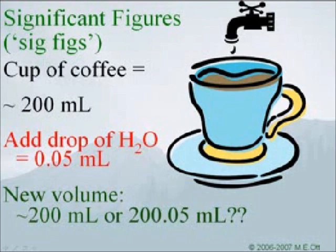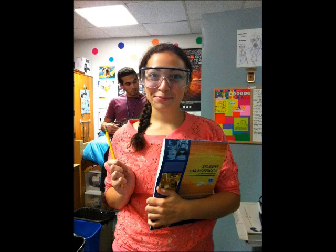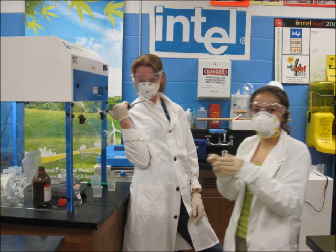I don't get it. Sig figs are the meaningful digits in a measurement. The last digit in any measurement is the first uncertain digit. This makes it the last significant figure. However, exact numbers, or numbers not obtained by measurement, contain an infinite number of significant figures.